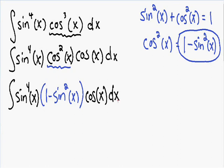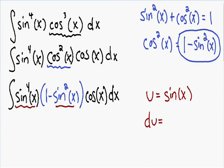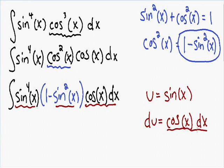Now this becomes an example where we can use u-substitution. We pick u to be the sine of x, so u equals sine of x. Then du is the derivative of sine of x, which is cosine of x dx. Notice how in our integral we have a cosine of x dx, and our du is also equal to cosine of x dx — this is a good indication we're on the right track, and this is why we separated that cosine of x dx, so we have something exactly equal to du.